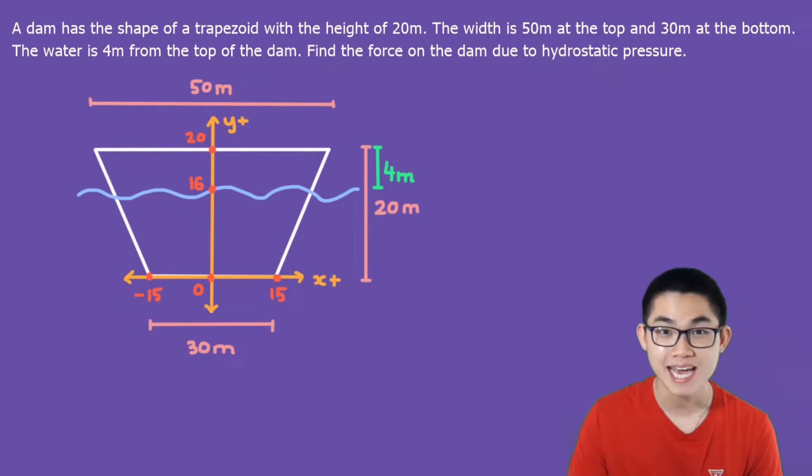The first step is to put the x and y-axis on this shape. So I've put the x-axis at the bottom of the trapezoid with the positive direction here. The y-axis is in the middle of the object and the positive direction is upwards. And because the distance here is 30 meters, then we know the distance from here to here is 15. That's why it's 15 here and 15 over here. So this is negative 15.